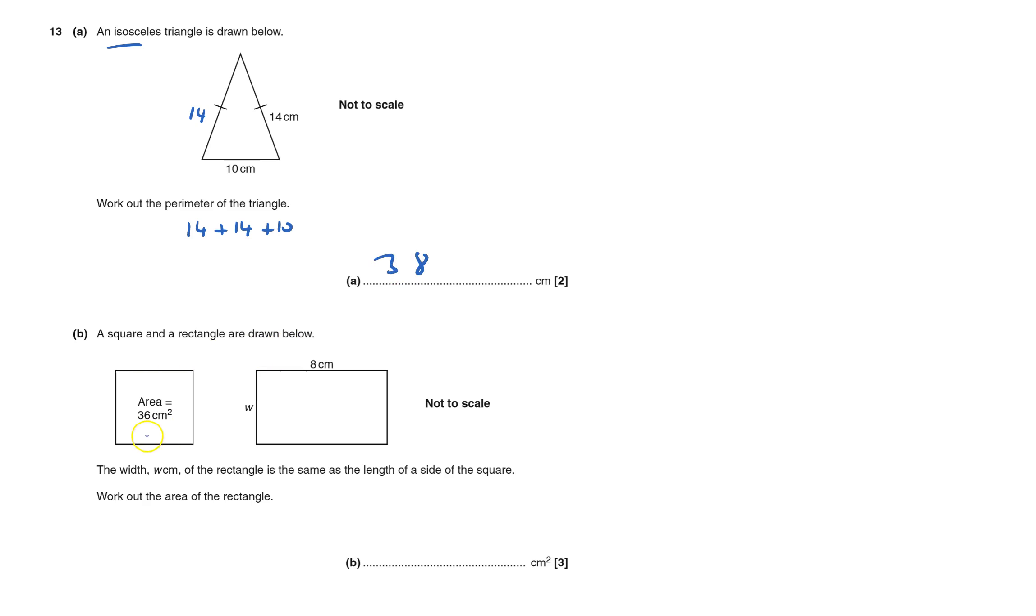A square and a rectangle drawn below. It's a square and it's a rectangle. The width w of the rectangle is the same as the length of the square.